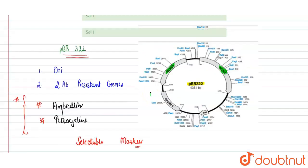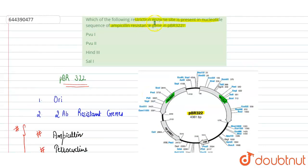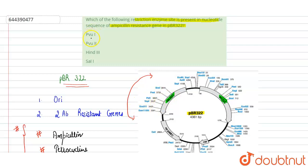The question asks which restriction enzyme site is present in the nucleotide sequence of the ampicillin resistance gene. We are talking about only this portion — the ampicillin resistance gene — which contains different restriction sites. Here we will see PvuI: this is the PvuI site, which is present in pBR322.